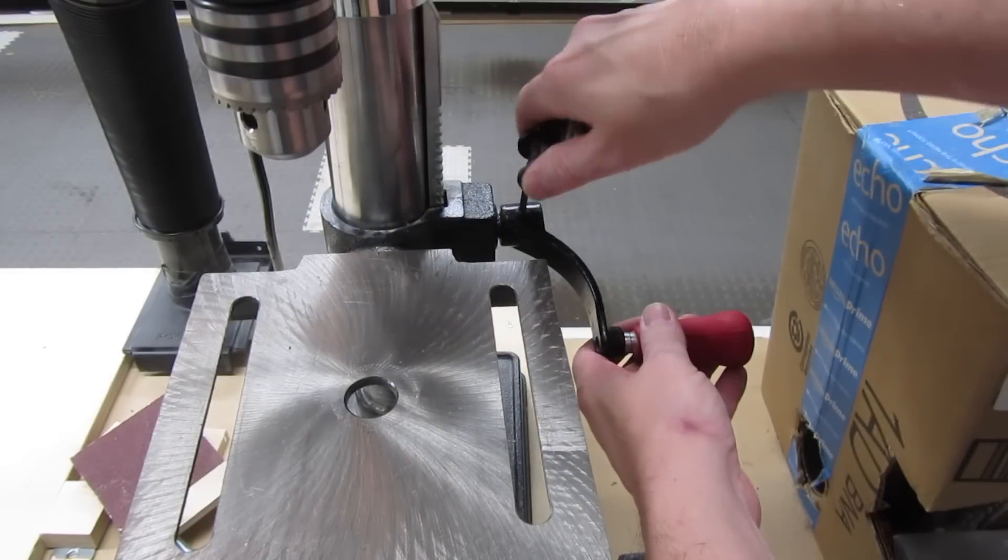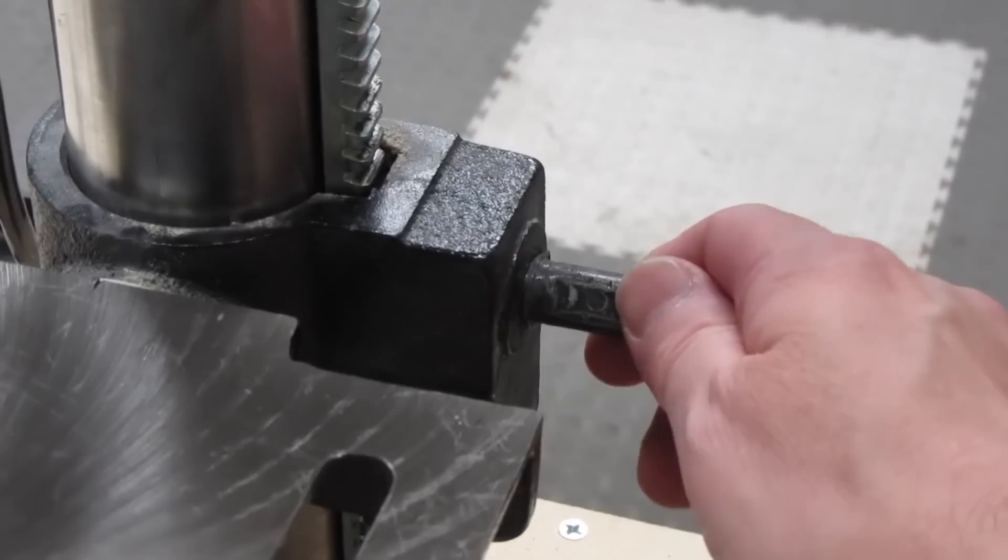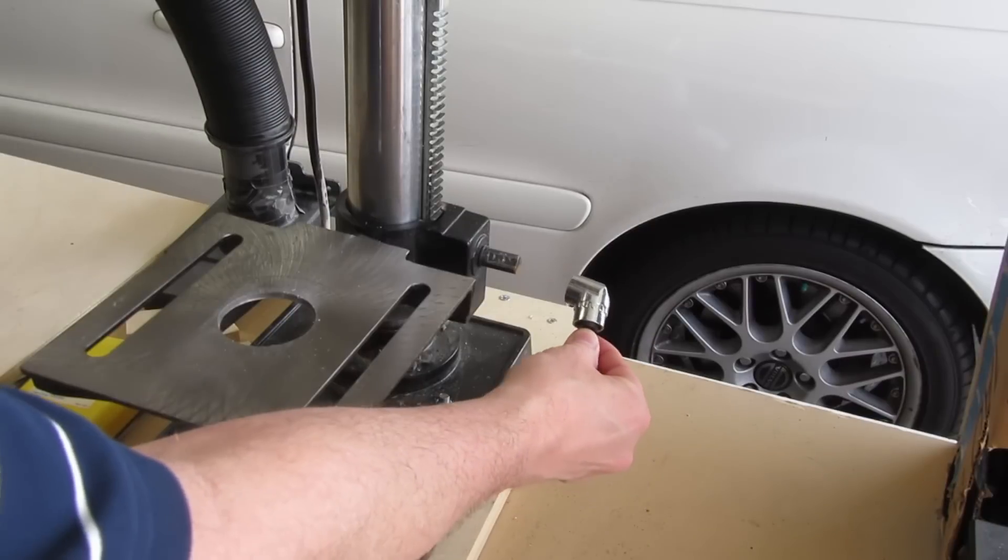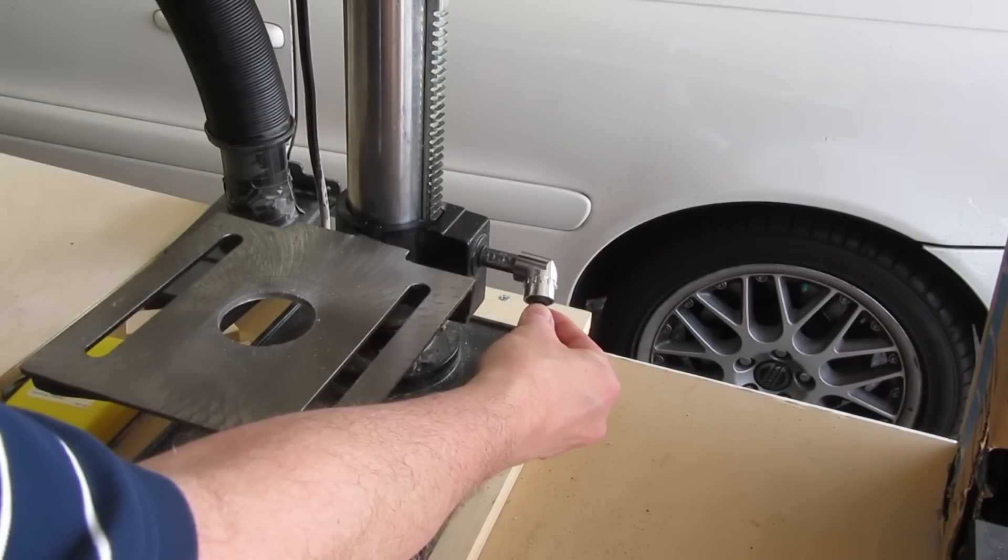I removed the annoying crank by loosening the set screw. The set screw presses against this flat portion on the crankshaft. Then I needed to figure out how to attach this end of the adapter to the crankshaft.